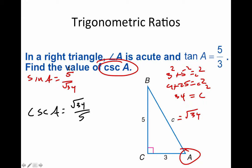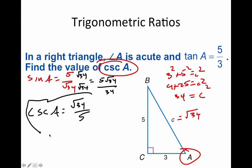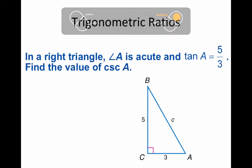Incidentally, 5/√34 is not in correct form — we can't leave a square root in the denominator. We rationalize by multiplying top and bottom by √34, giving 5√34/34. That's the final simplified answer for the sine.